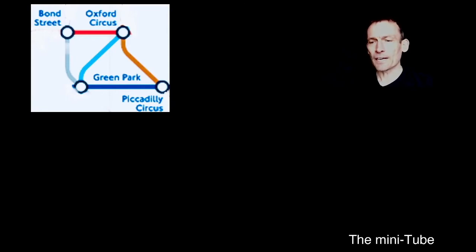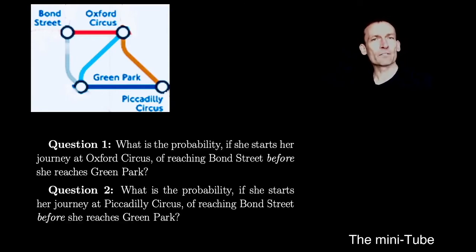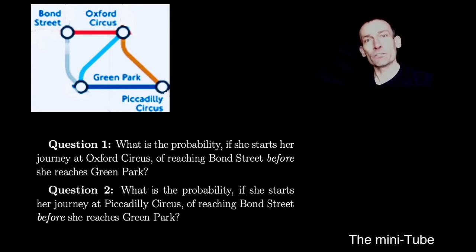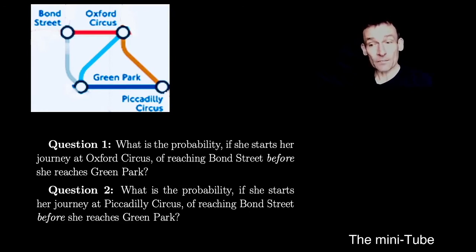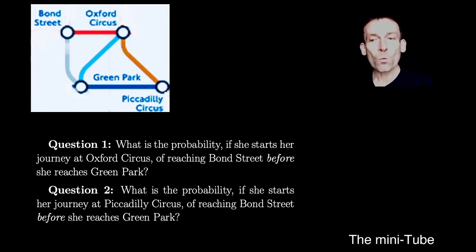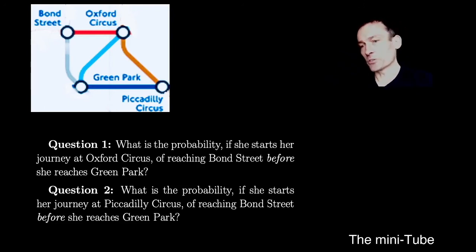Here's that question again — there are actually two questions. There's a tourist making this random journey. Question one: what's the probability that if she starts at Oxford Circus and takes one of the three lines out of Oxford Circus — so there's a one-third probability she'll go to Piccadilly Circus, for example — she reaches Bond Street before she reaches Green Park? When she's at Piccadilly Circus, she could either go back to Oxford Circus or to Green Park with equal probability, and she could keep going round and round, but eventually she'll reach either Bond Street or Green Park. Question two is the same question, but she starts at Piccadilly Circus instead.